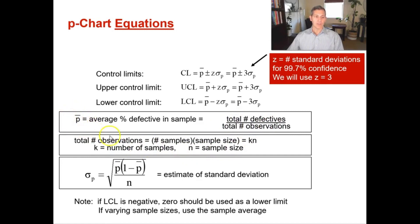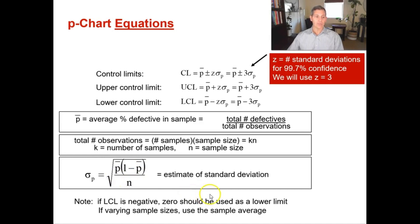To get your P-bar — the average percent defective in a sample — you take your total number of defects over the total number of observations. To calculate the standard deviation of P, you take the square root of P-bar multiplied by one minus P-bar, divided by N (your sample size). If your lower control limit is negative, zero should always be used. And if there are varying sample sizes, use the sample average.